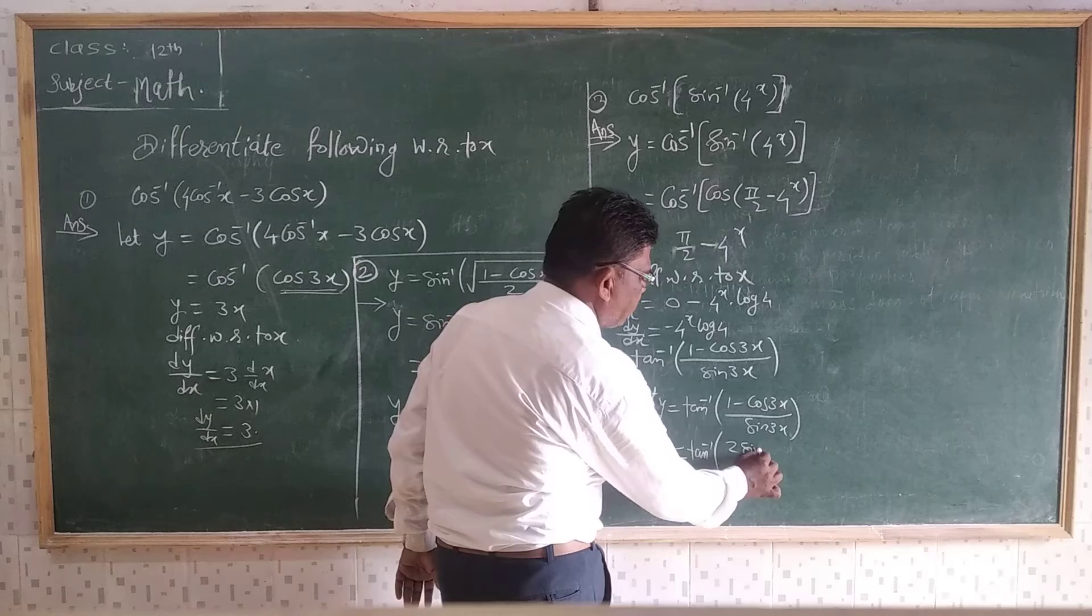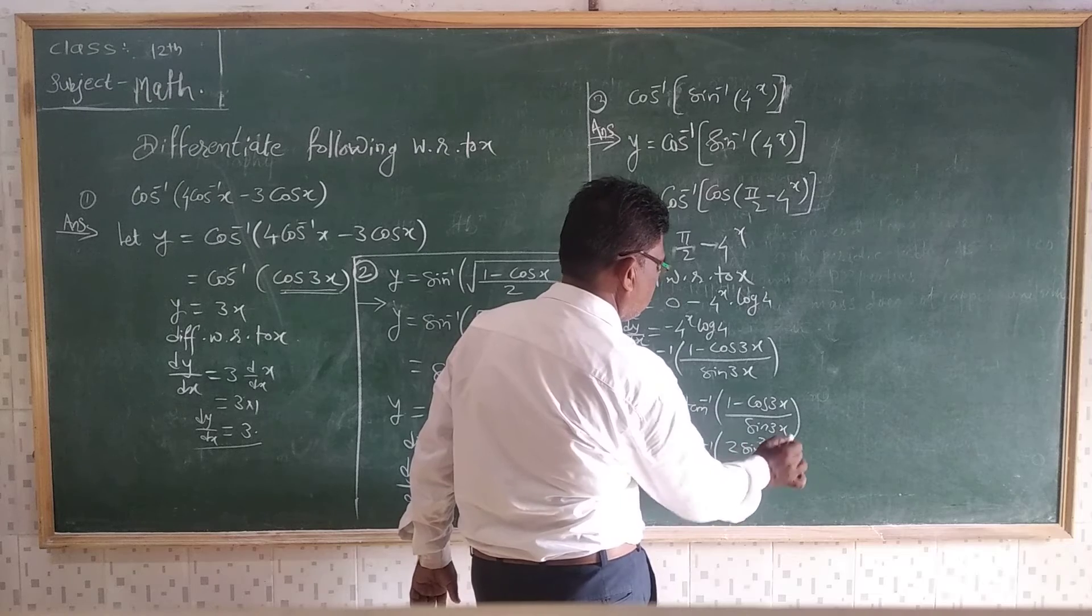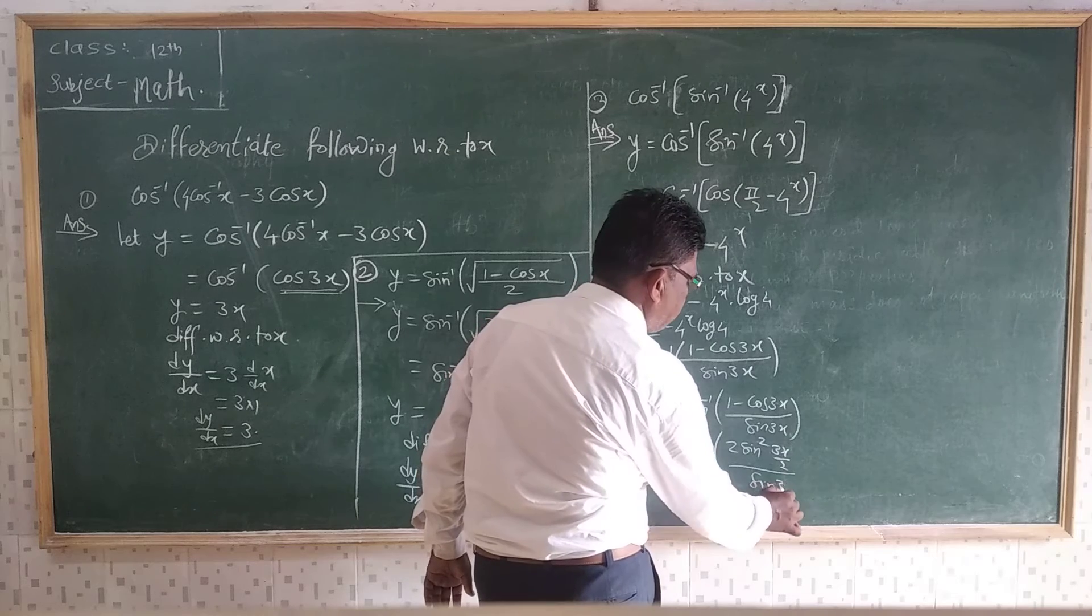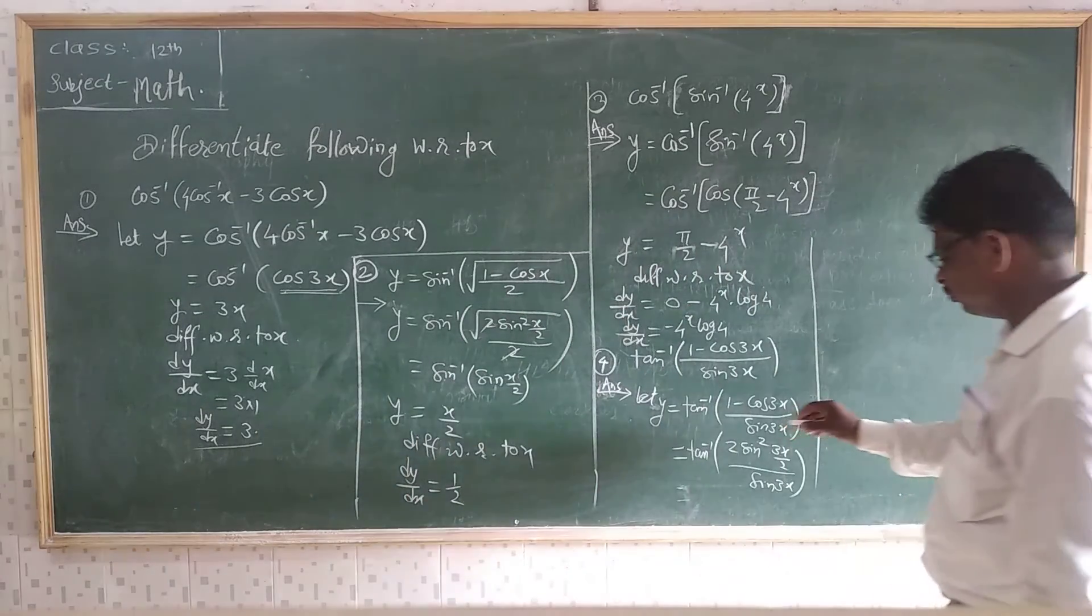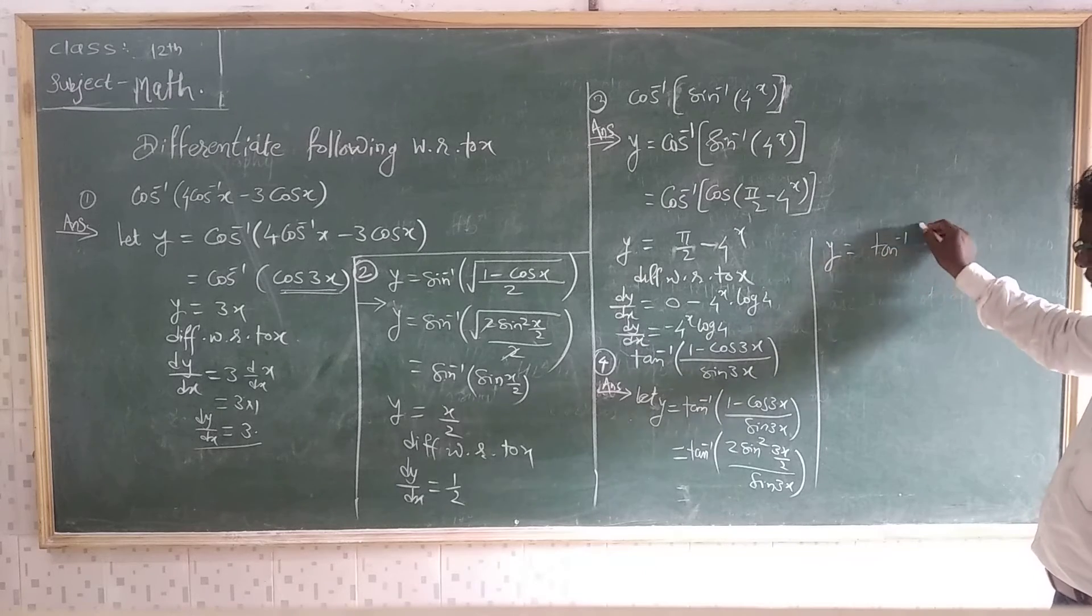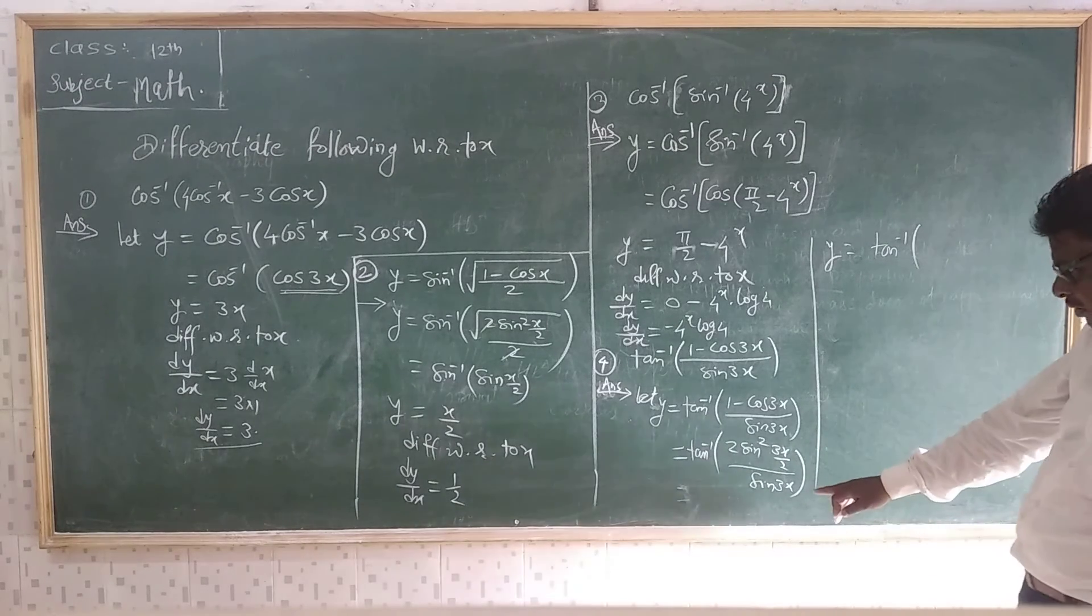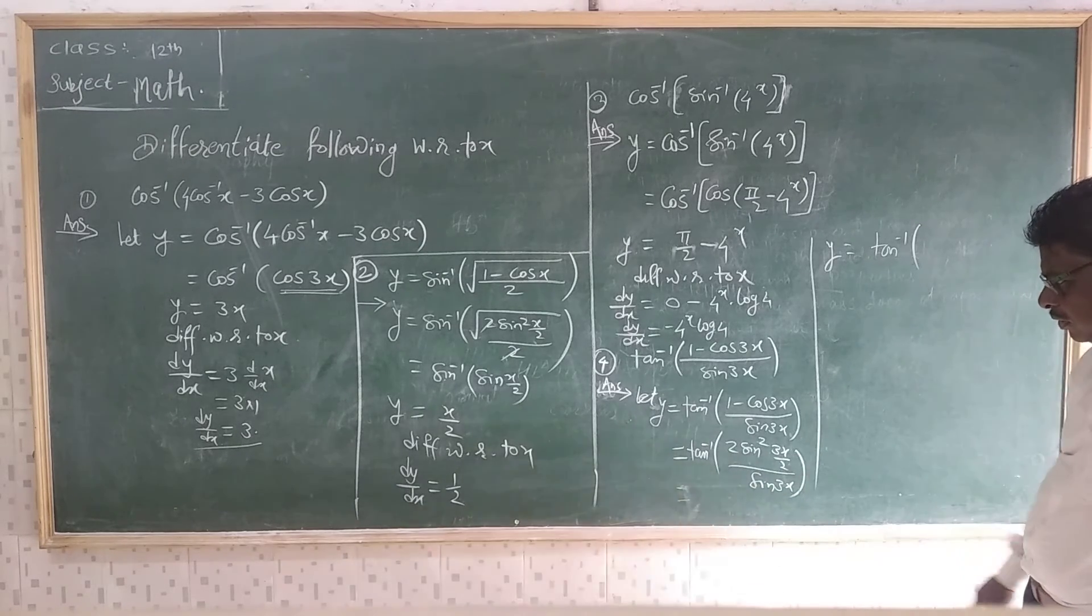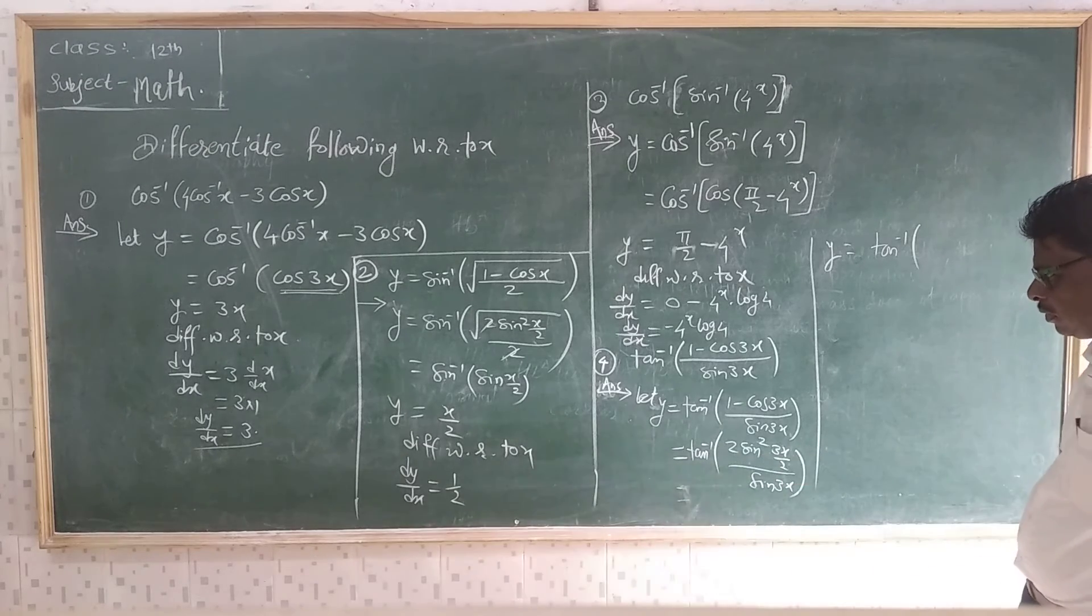So that is 2 sin²(3X/2) divided by sin 3X. So what do we get? Y equal to tan inverse of 2 sin²(3X/2) upon sin 3X.